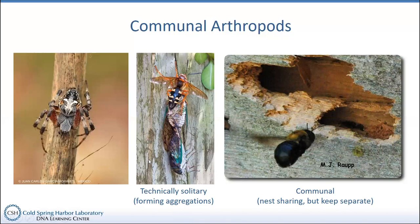Some wasp and bee communities demonstrate a behavior known as protandry, where in a group of communal burrows, males will emerge first and basically sit and wait — or even fight — until females emerge. Then the males with the best position will be able to jump out and claim the best females as they emerge. Clearly, that type of aggregation leading to communal behavior is advantageous, at least for reproductive reasons.